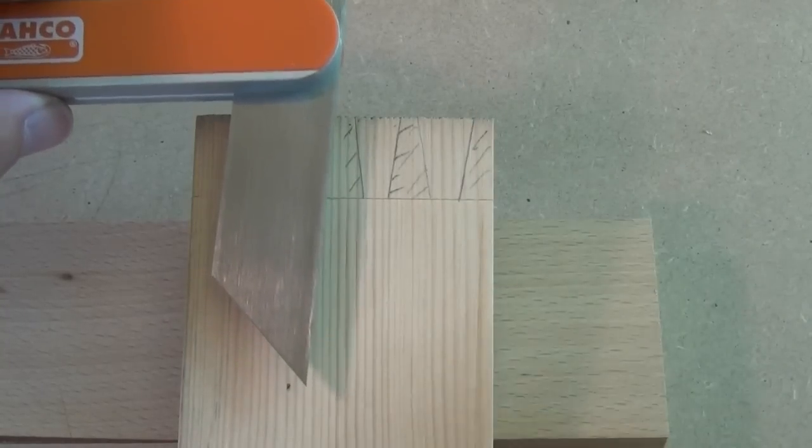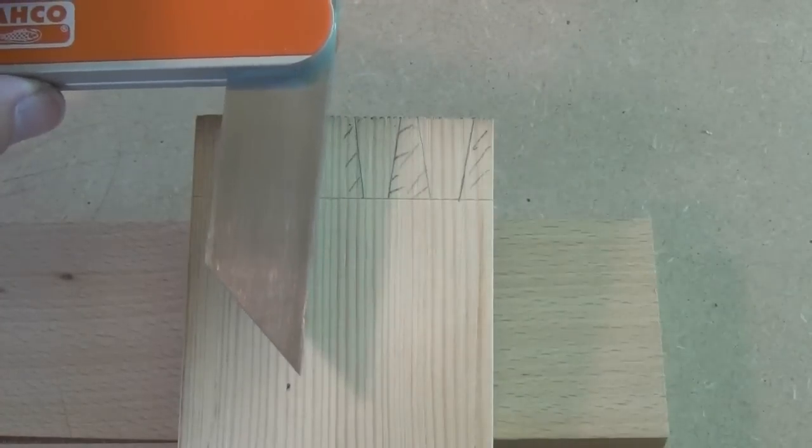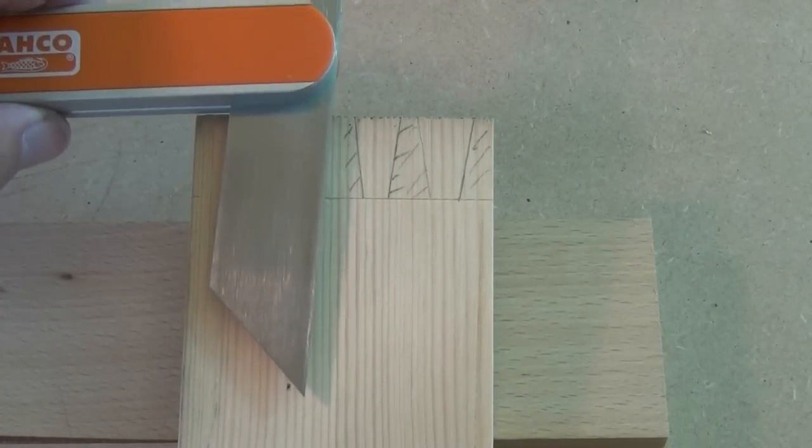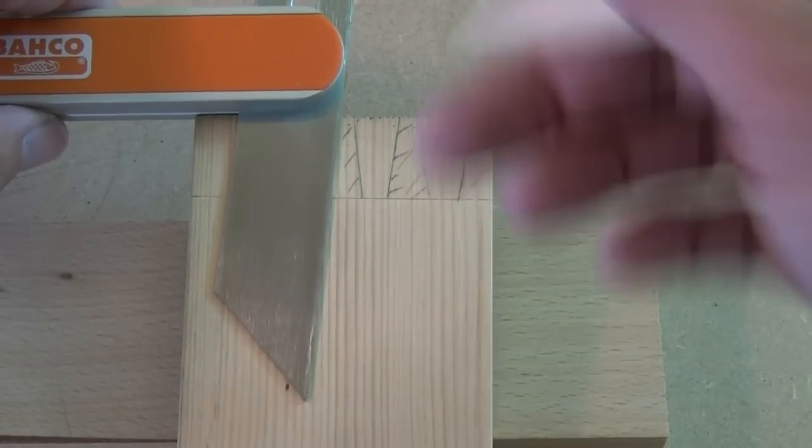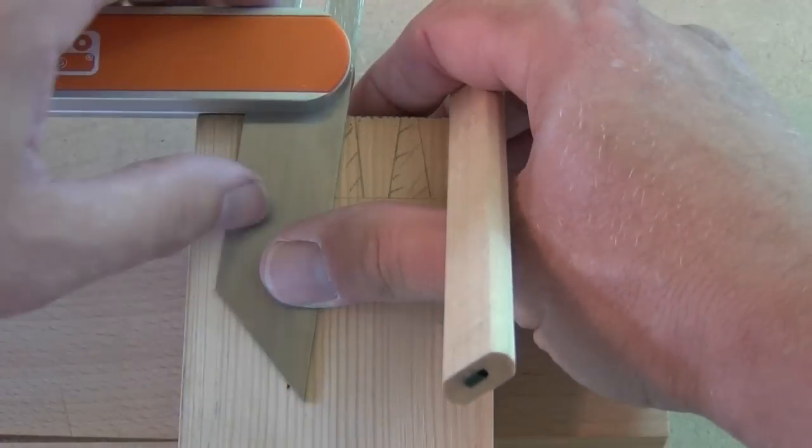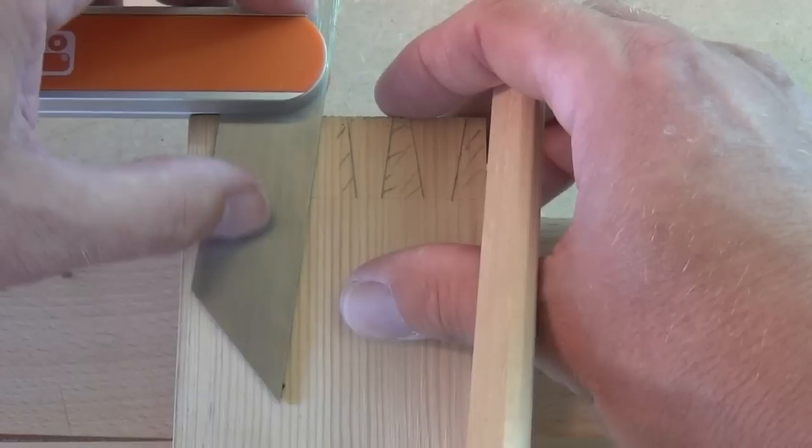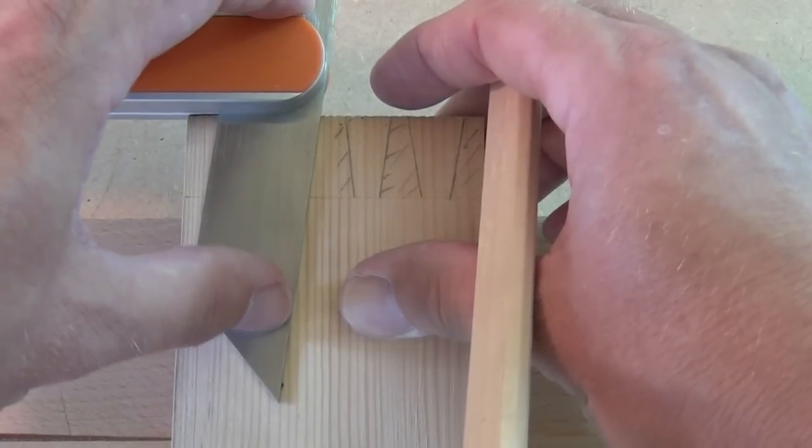Once you've done a few dovetails, you'll know roughly what the correct angle is for the wood you're working in. Once you've set your bevel gauge though, remember to keep it the same. Otherwise your dovetails may look a bit odd.